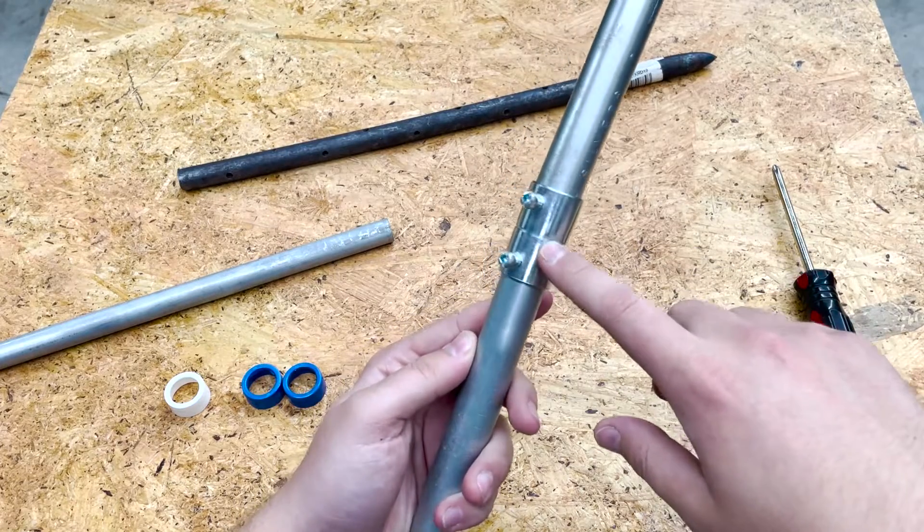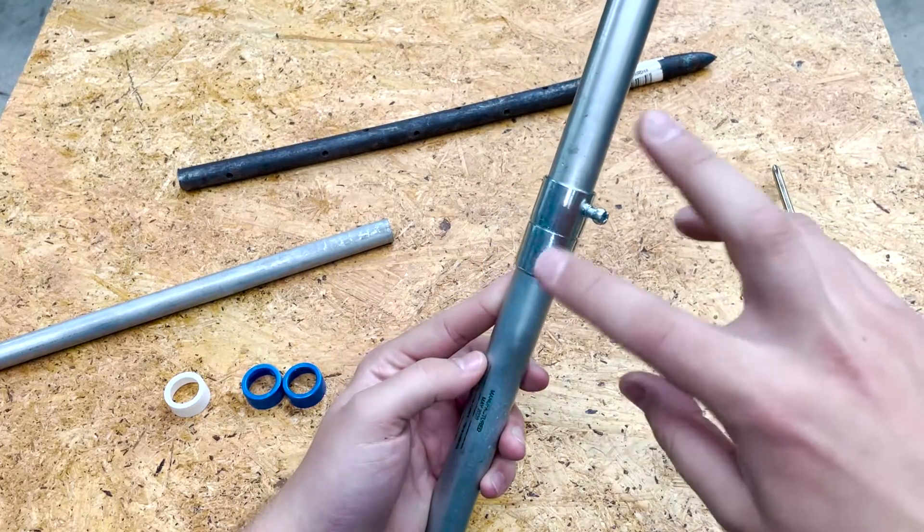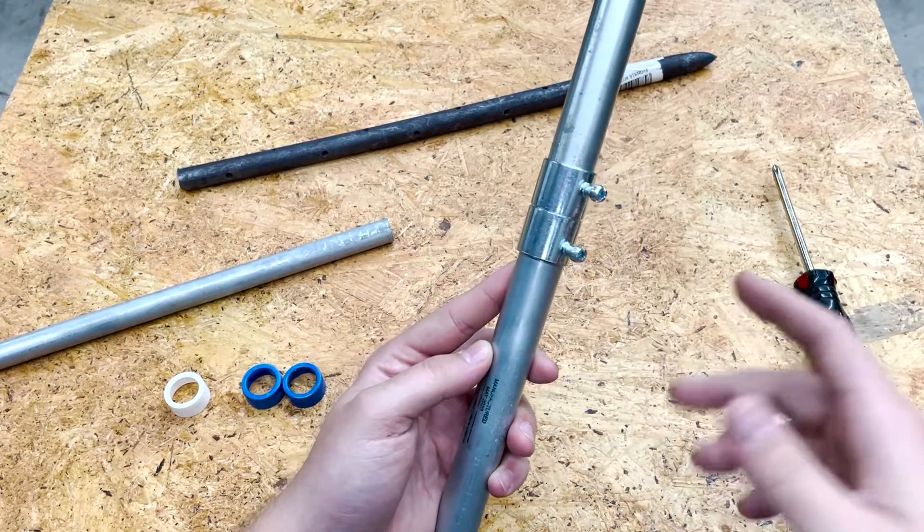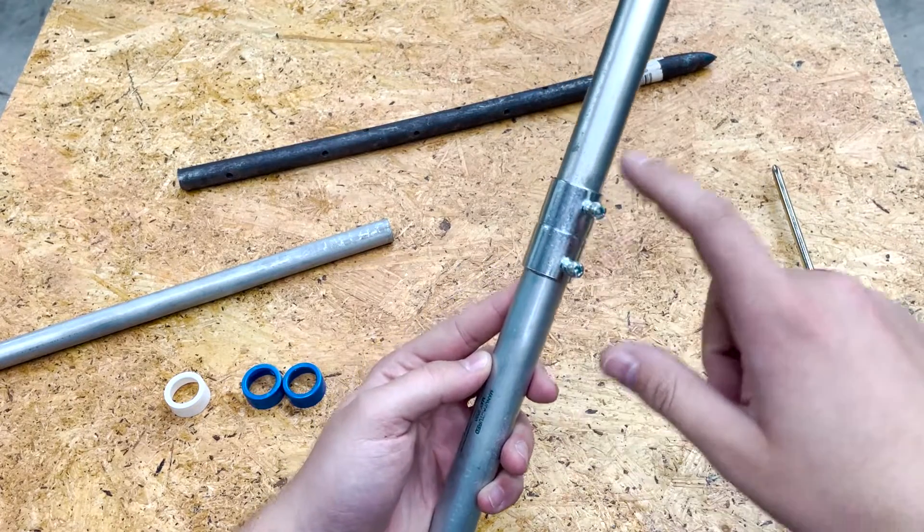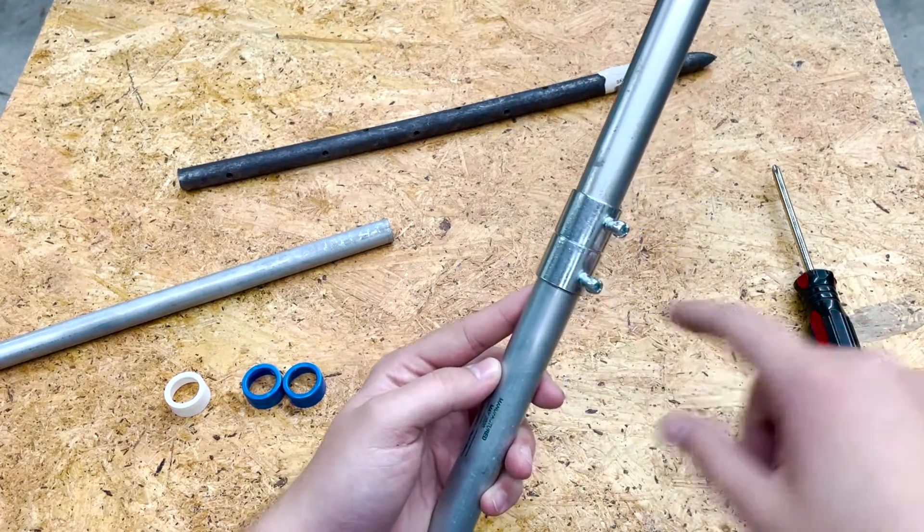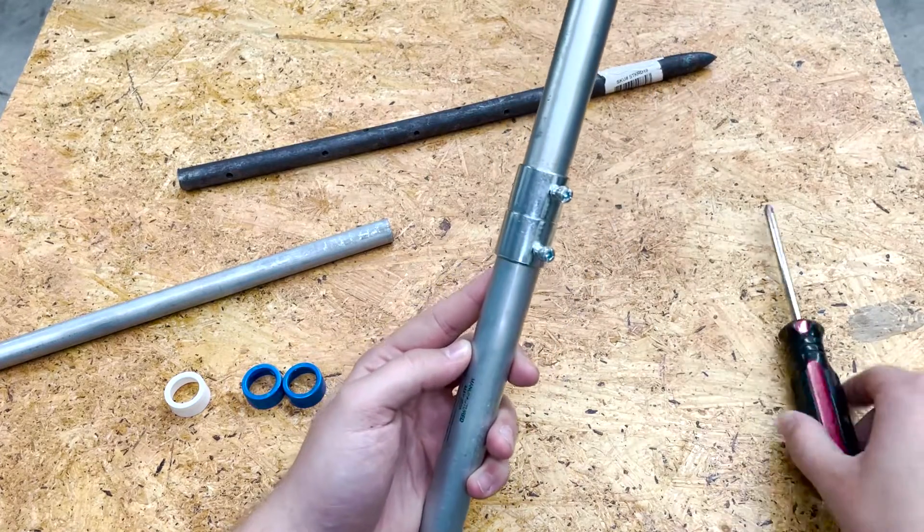They used off-the-shelf electrical couplings because they needed the two pipes to clamp separately or individually. You can see there's a set screw on each pipe and it clamps down separately with a screwdriver and secures it that way.